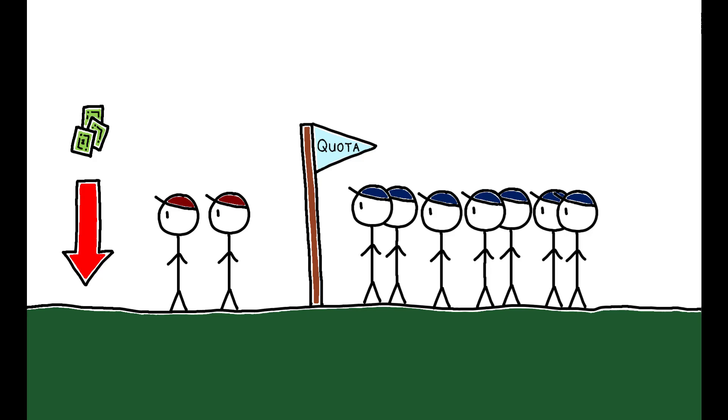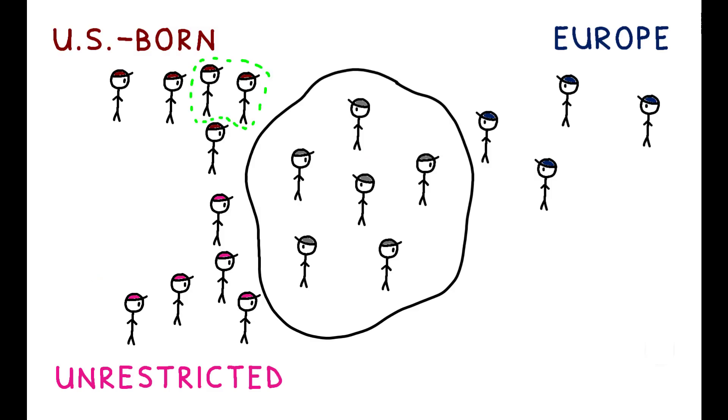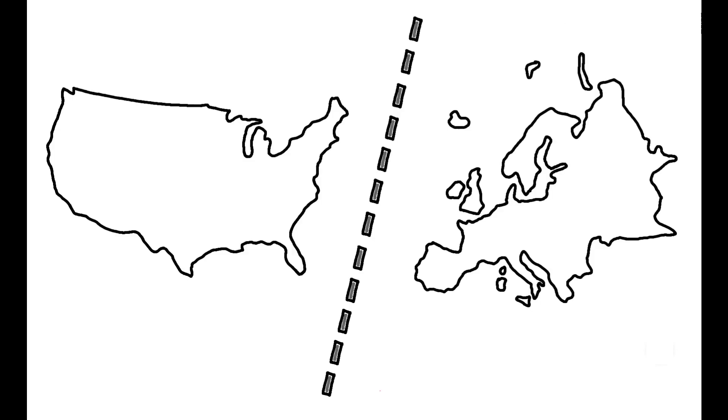While the restrictions did open up employment opportunities for some U.S.-born workers, in particular for those who moved to urban areas to take jobs previously held by European immigrants, the policy's overall effectiveness was blunted by the economy's adjustment toward other substitutes, namely increased immigration from unrestricted countries and a shift toward more capital-intensive production.